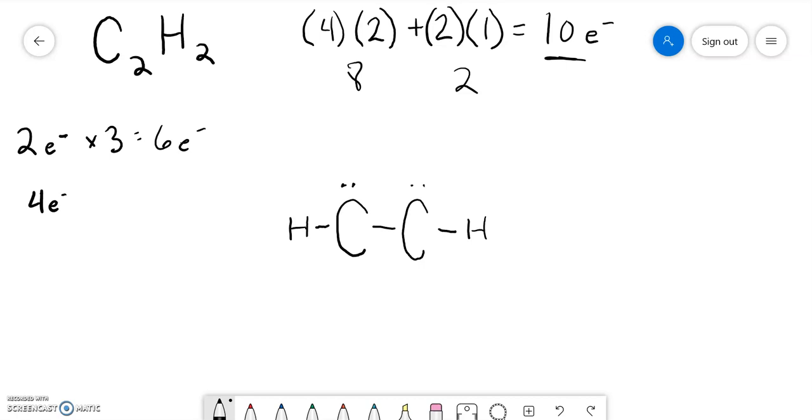So what you do in this situation, where you don't have any electrons left to give, is you have them share. I'm going to erase this lone pair, and I am going to have that pair of electrons instead form a bond between the two carbons.